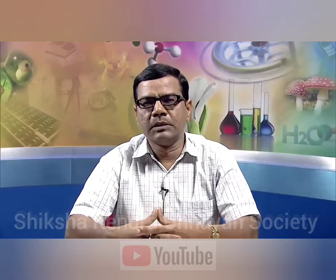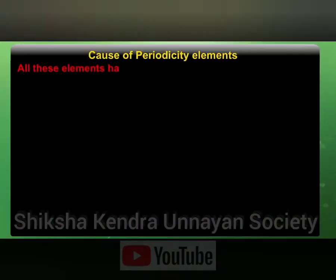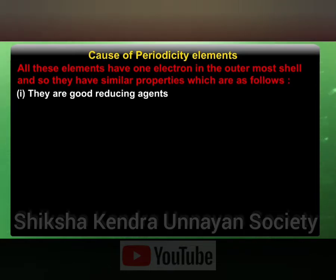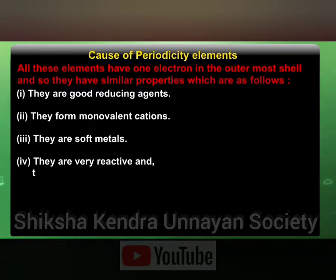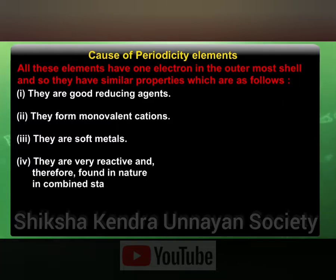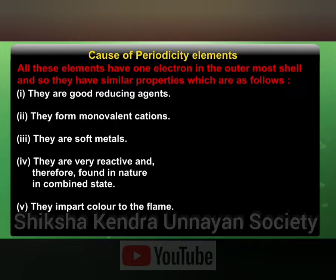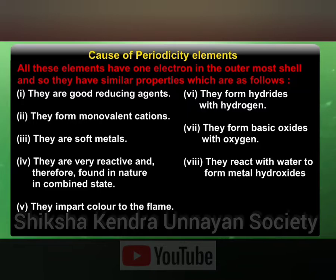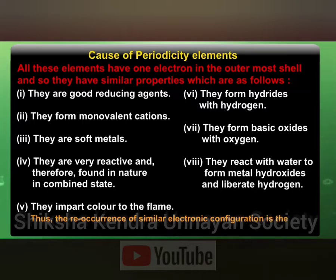Let us understand what is the cause of periodicity of elements. All these elements have one electron in the outermost shell and so they have similar properties: they are good reducing agents, they form monovalent cations, they are soft metals, they are very reactive and therefore found in nature in a combined state. They impart color in the flame, they form hydrides with hydrogen, they form basic oxides with oxygen, and they react with water to form metal hydroxide and liberate hydrogen. Thus, the occurrence of similar electronic configuration is the cause of periodicity in properties of elements.